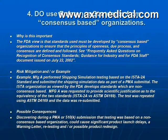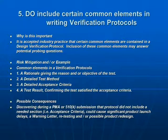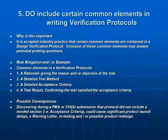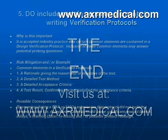The fifth do involves common elements in verification protocols. Although there are no official guidelines or directives on common elements needed in a protocol, it is accepted industry practice to include certain elements: a rationale or discussion of the test and its objectives, a detailed test method that is a step-by-step guide, a detailed acceptance criteria that is clear and concise, and a test result which clearly states the acceptance criteria has been met. These elements will help to avoid confusion when the final report is being reviewed.